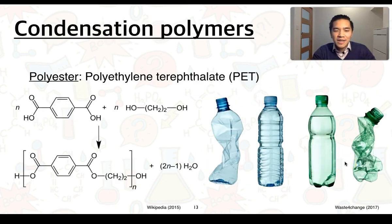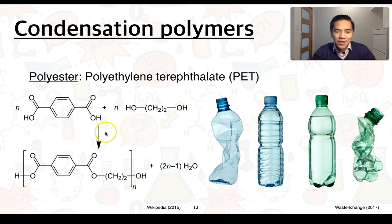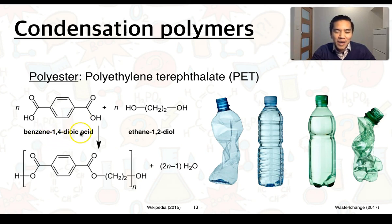To finish up, we'll consider some examples of condensation polymers. Starting with a polyester, we have polyethylene terephthalate, or PET. The two monomers that produce PET are benzene-1,4-dioic acid (a dicarboxylic acid) and ethane-1,2-diol (a diol). These undergo condensation reactions to produce a polymer with the shown repeating unit. PET is most commonly associated with manufacturing plastic bottles.